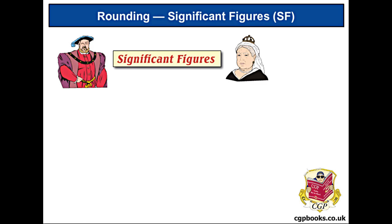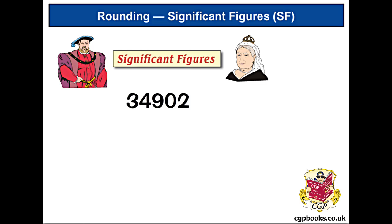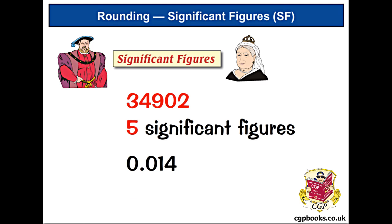Poor zeros. So for example, 34902 has five significant figures. The first is three, the second is four, and so on. But 0.014 only has two significant figures — one and four.